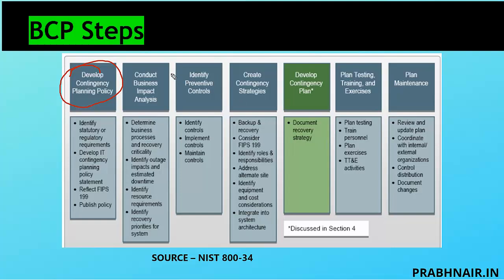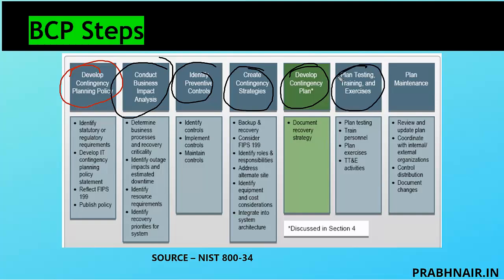Based on the policy, we conduct the BIA. Since it is not possible to restore everything, the BIA helps us prioritize what needs to be recovered first and what later. Once done with BIA, we identify preventative controls to mitigate risk. Residual risks like earthquake or flood are handled through the contingency strategy. We then prepare the contingency plan — hot site, cold site, warm site — submit it to senior management for approval, test it, and update it regularly.